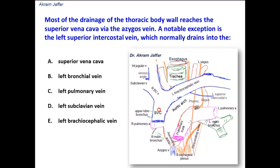Looking at the options: the superior vena cava is not correct, because the superior vena cava receives the azygous arch. The left bronchial vein is incorrect — it does not drain into the left bronchial vein. The left pulmonary vein is incorrect — the left pulmonary vein carries oxygenated blood from the lung. The left subclavian vein is also incorrect; it drains into the left brachiocephalic vein, which is formed by the union of the left subclavian and the left internal jugular vein.